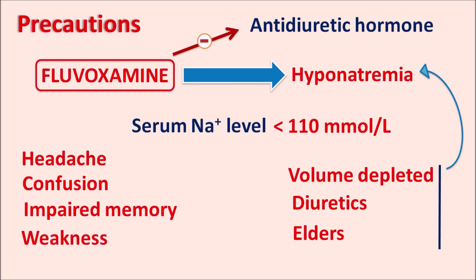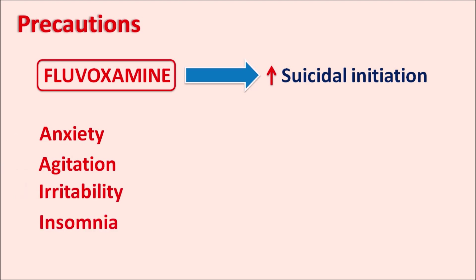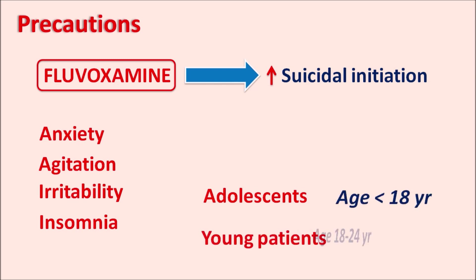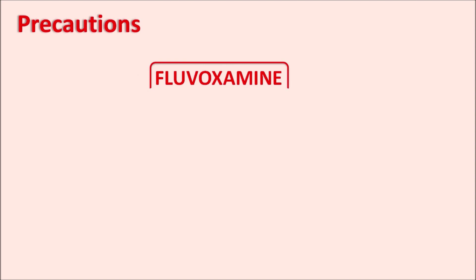Like other SSRIs, fluvoxamine can increase suicidal thoughts due to anxiety, agitation, irritability, and insomnia that develop in patients. These symptoms can further increase suicidal risk, and the risk is more pronounced in children and adolescents under 18 years of age and in young adults aged 18 to 24 years.